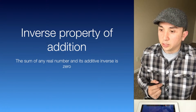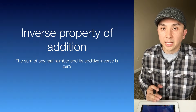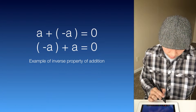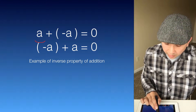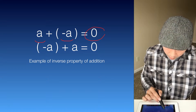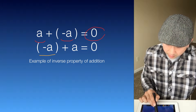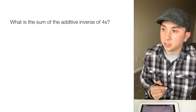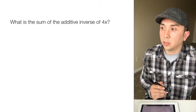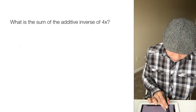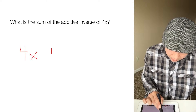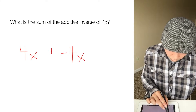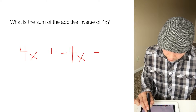The inverse property of addition states that the sum of any real number and its additive inverse is 0. So a plus its additive inverse negative a equals 0, or negative a plus its additive inverse a equals 0. For example, what is the sum of the additive inverse of 4x? We have 4x plus its additive inverse negative 4x, so 4x plus negative 4x equals 0.